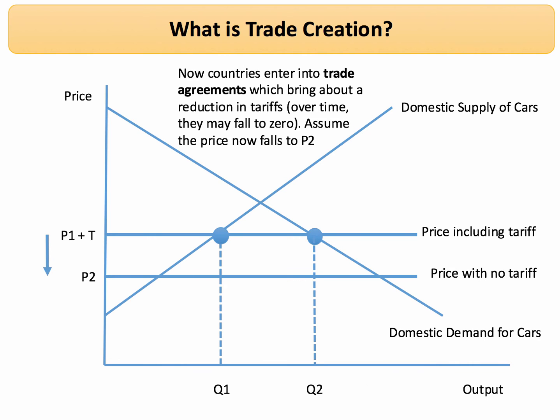So let's assume now that countries enter into a trade agreement which over time — not necessarily instantaneously — brings down the average tariff. They may fall to zero but that may happen over a number of years. So now the tariff falls to zero and assume the price now falls to P2 — that's now the price for cars in the market without any import tariff.